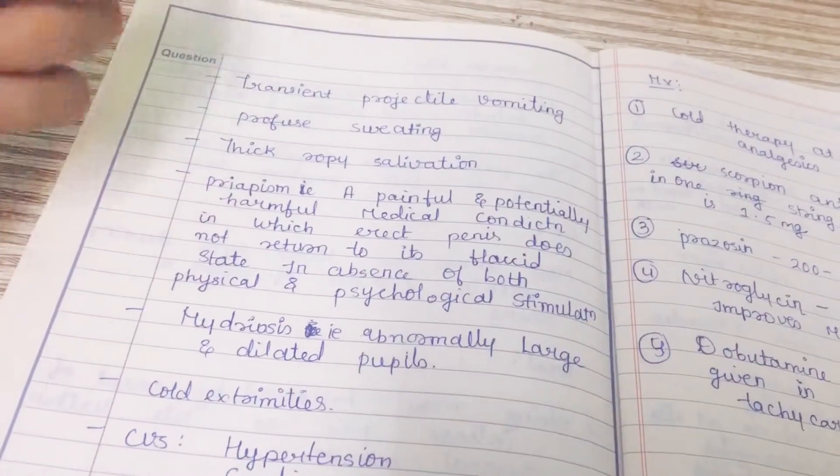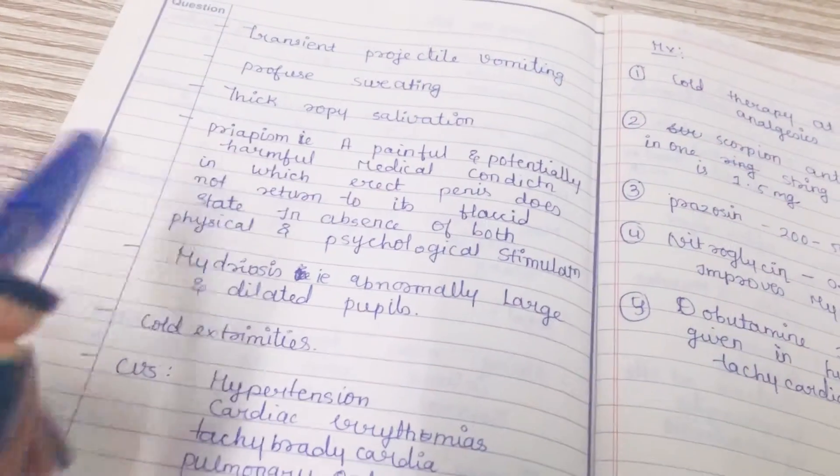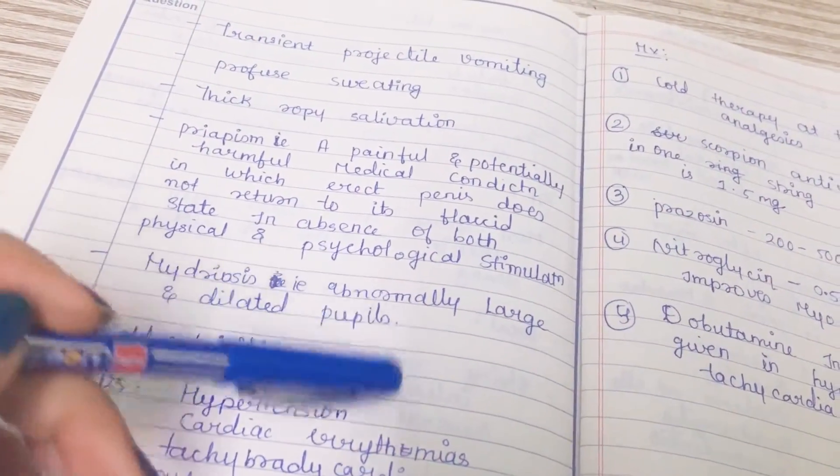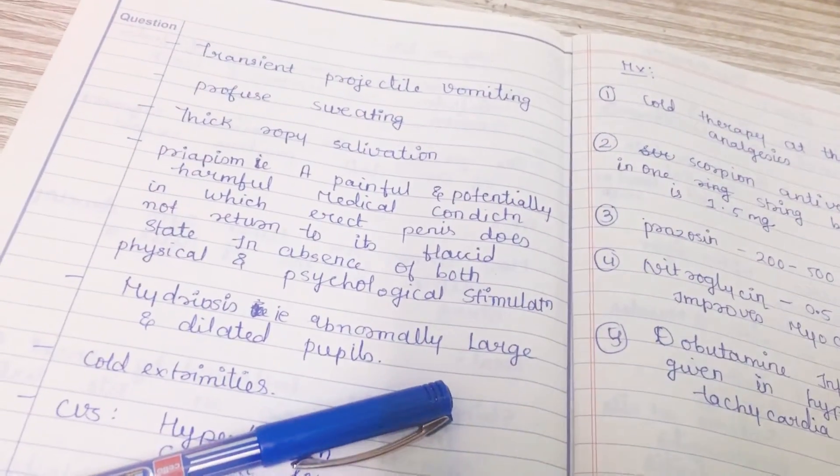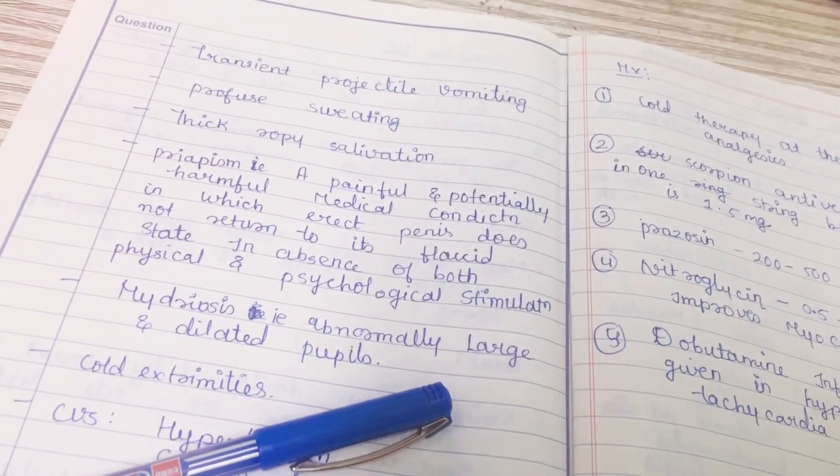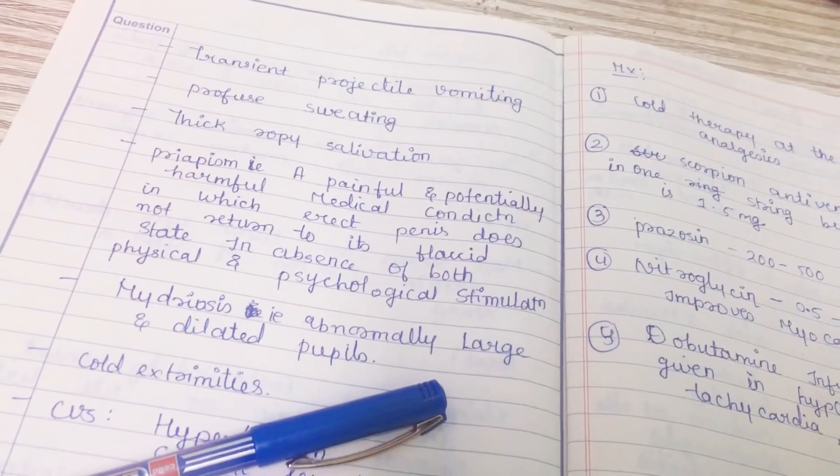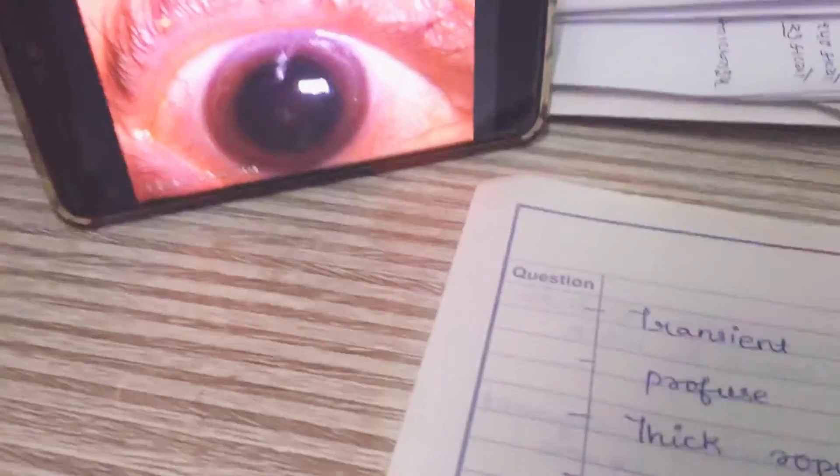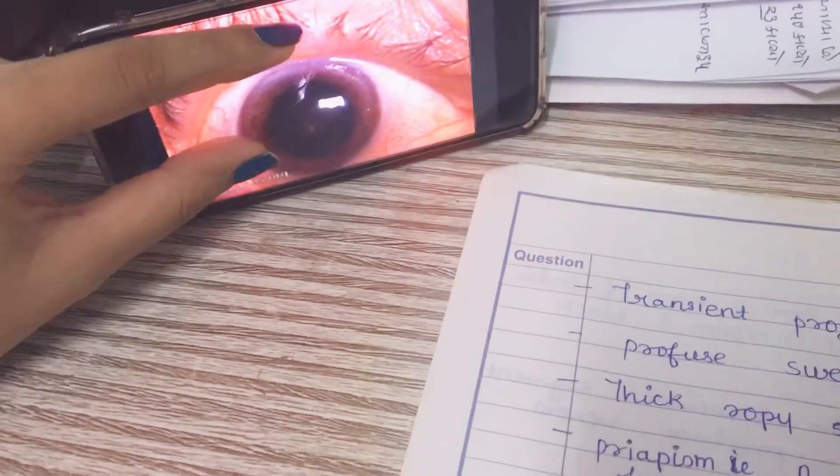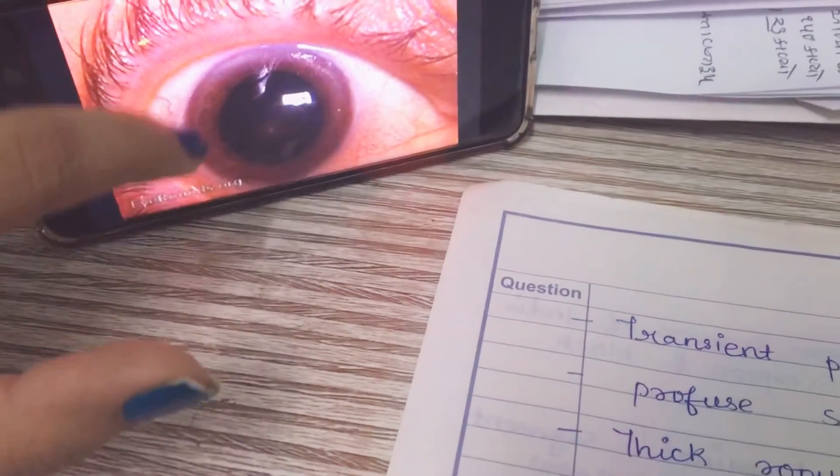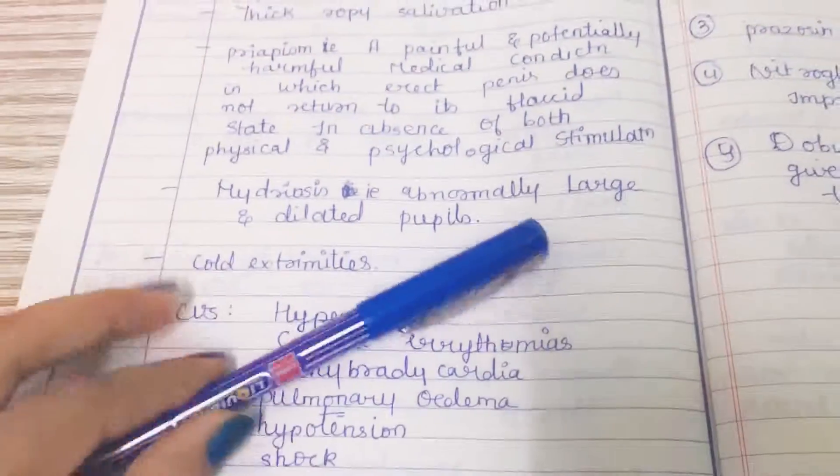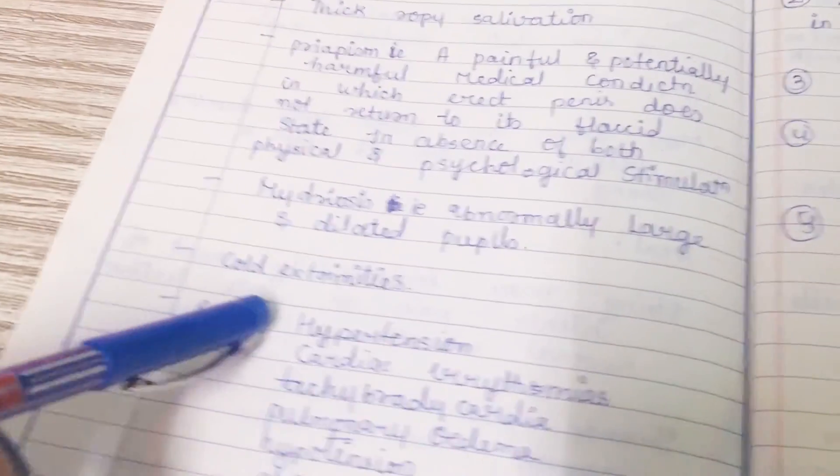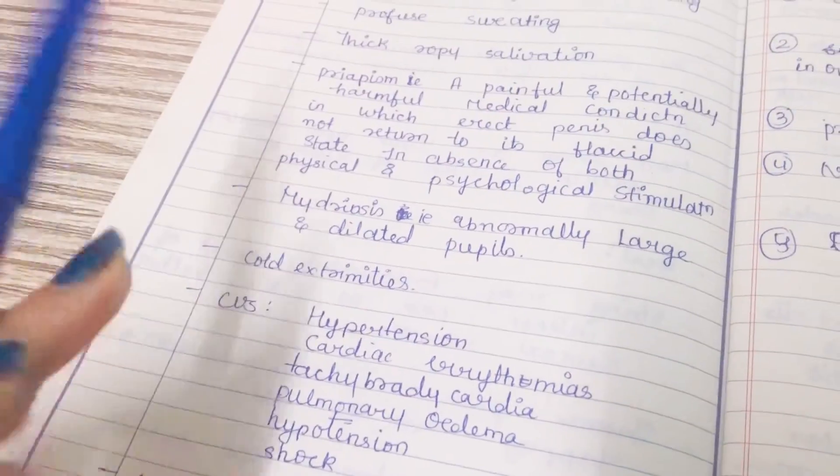Mydriasis can occur, which is abnormally large dilated pupils. It is the main characteristic symptom of scorpion bite. The pupil is so much enlarged, it is not like a normal sized pupil. You can see the extremities will go cold.